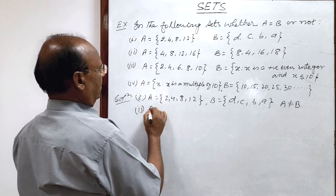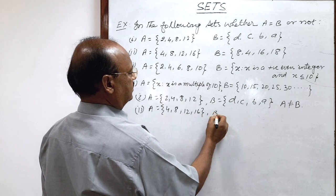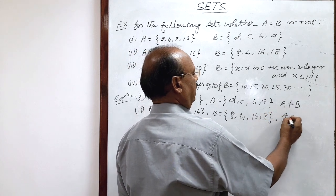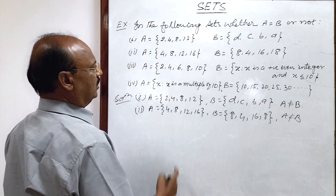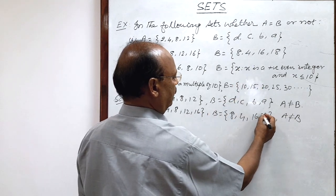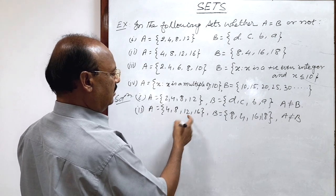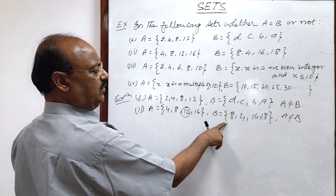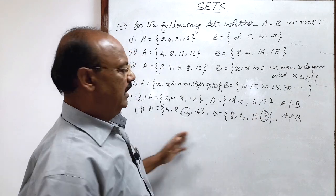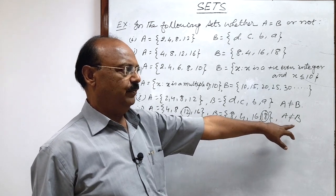Second part: here A has elements 4, 8, 12 and 16, and set B has elements 8, 4, 16 and 18. Here also A is not equal to B. Why? Because in set A, you see there is an element 12 which is not in set B. And in set B there is element 18, which is not in set A. So definitely the elements in these two sets are not exactly the same, so set A is not equal to set B.